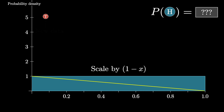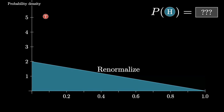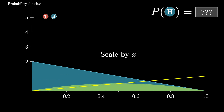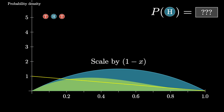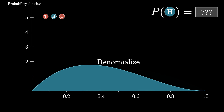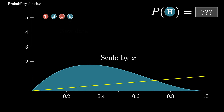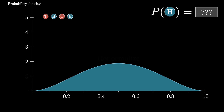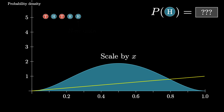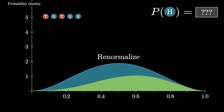How does new data change your beliefs? The plot being animated right now illustrates one way you could go about answering this, using ideas of Bayesian updating that we're going to go over in this video. We have a coin with some fixed but unknown probability of coming up heads, and this plot represents the belief of some agent for what that coin's true probability is, and it gets updated every time it sees a new flip.